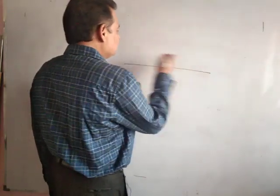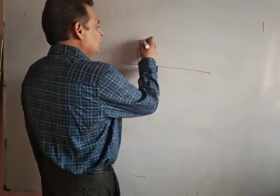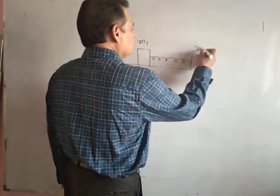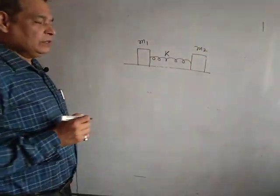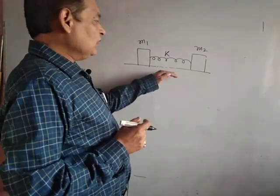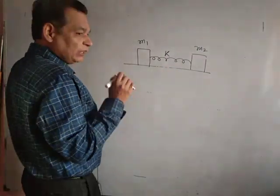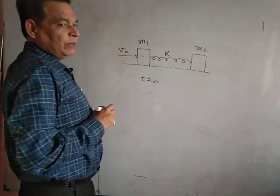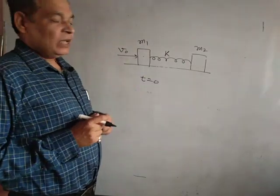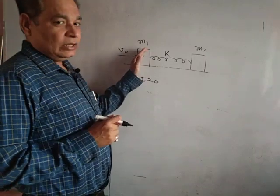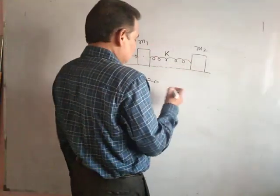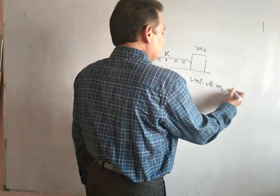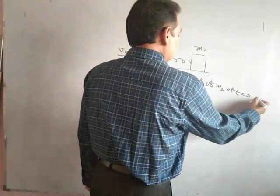Consider this example: a frictionless surface with a body of mass M1 and a body of mass M2 connected by a spring of spring constant K. The spring itself is massless. At time t = 0, M1 is given velocity V0 by an impulse. The velocity of M2 at t = 0 is zero, because with a spring, instantaneous change in velocity does not occur.